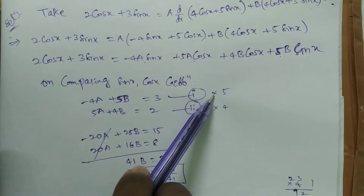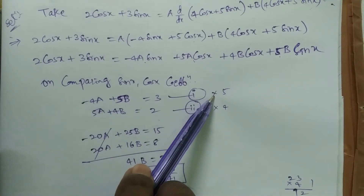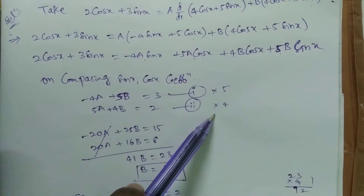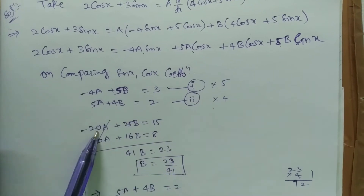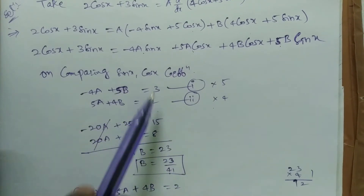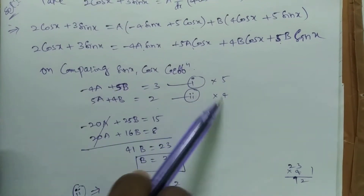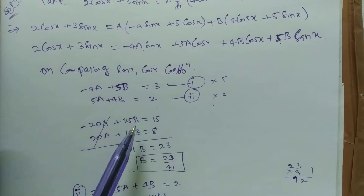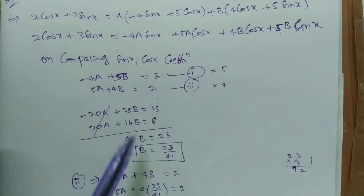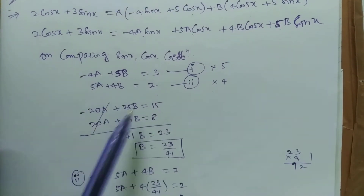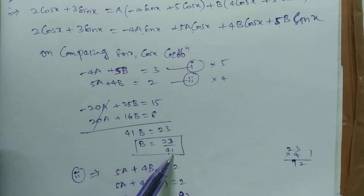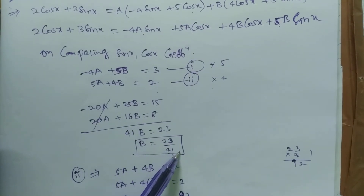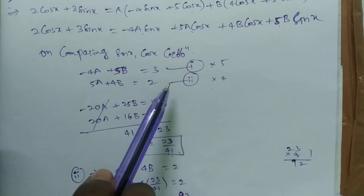Now multiply equation (1) by 5 and equation (2) by 4. From equation (1) times 5: -20A + 25B = 15. From equation (2) times 4: 20A + 16B = 8. Adding these, the A terms cancel: 41B = 23, so B = 23/41.